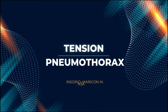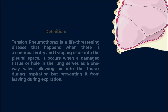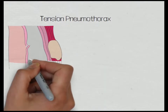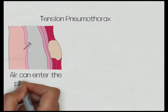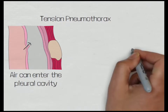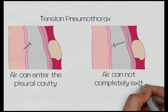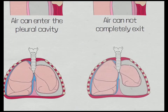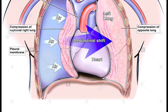Tension pneumothorax is a life-threatening disease that happens when there is a continual entry and trapping of air into the pleural space. It occurs when damaged tissue or a hole in the lung serves as a one-way valve, allowing air into the thorax during inspiration but preventing it from leaving during expiration. Each breath raises the pressure in the chest cavity, thereby squeezing the lungs, heart, blood vessels, and other chest tissues.